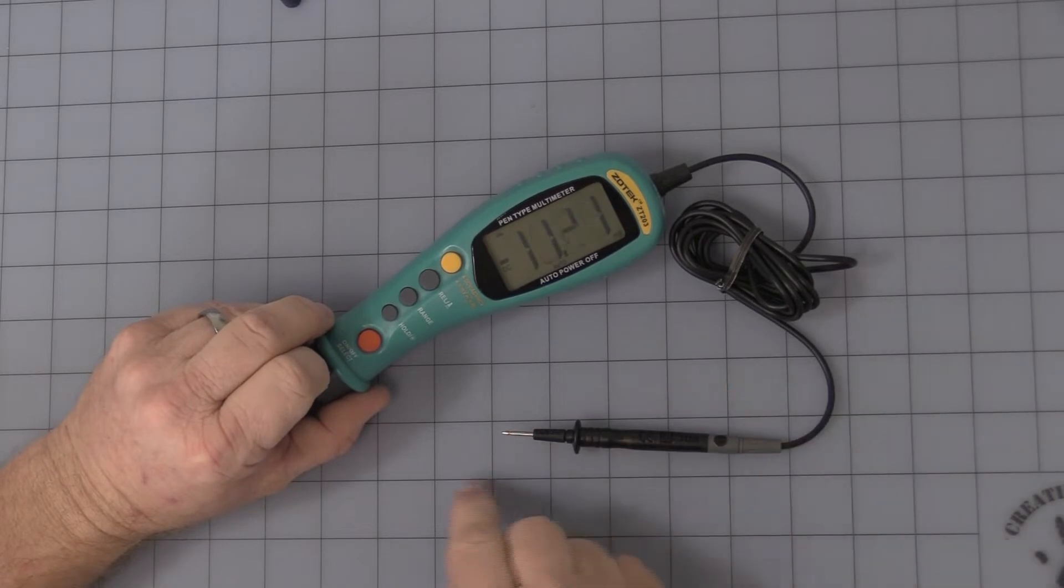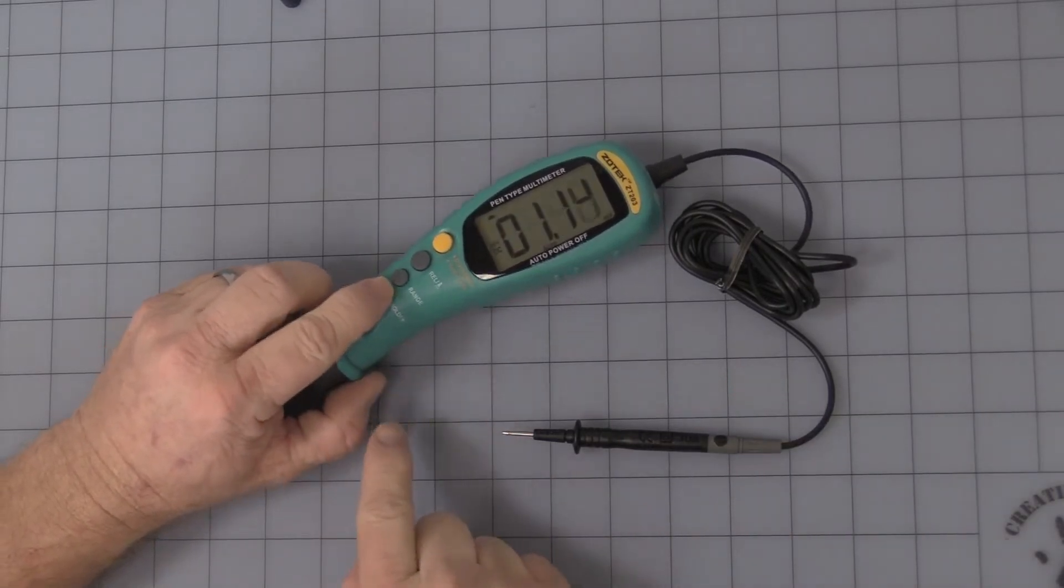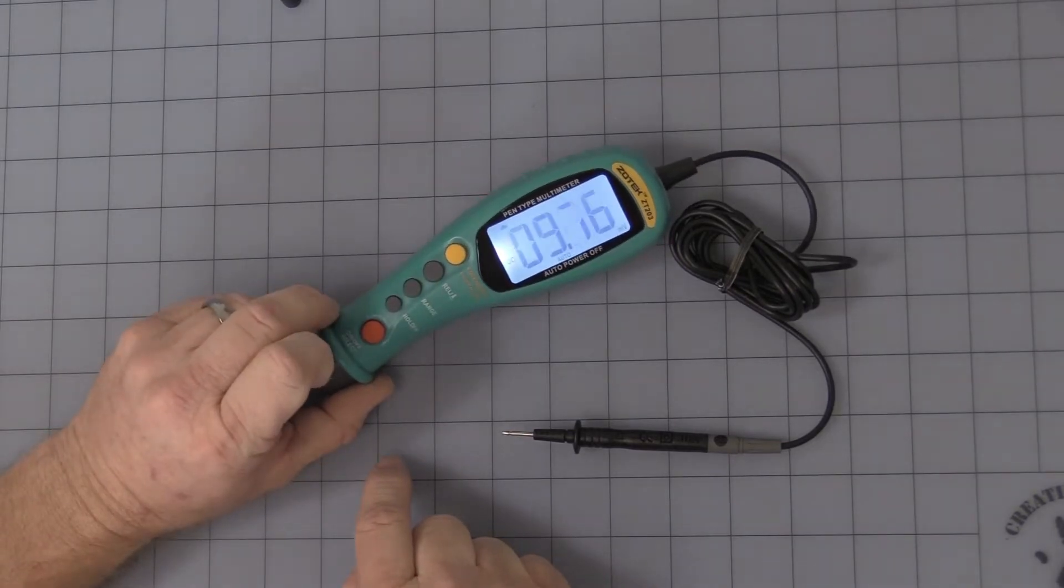And first thing I'm going to do is just so you can see better is the second button, it says hold and light. You press and hold and it turns on the back lighting for the meter.